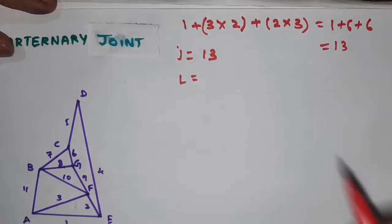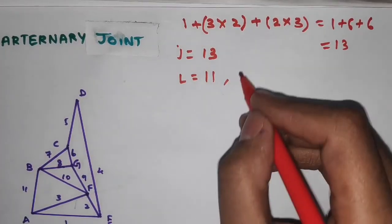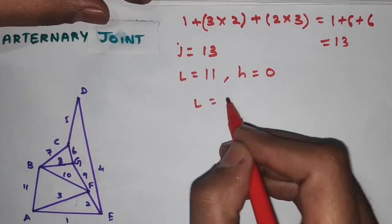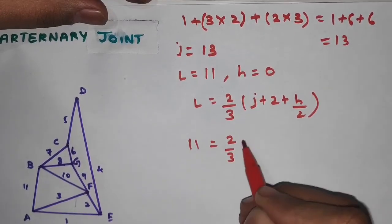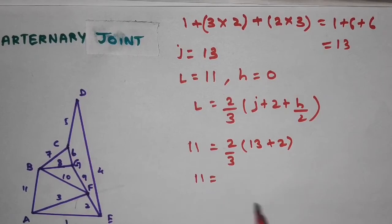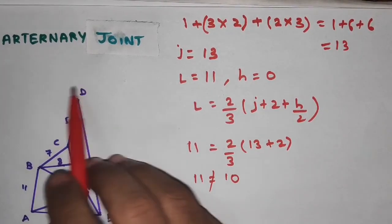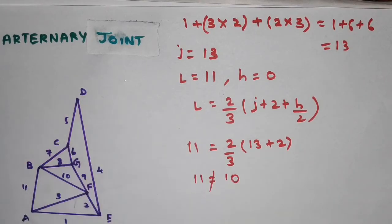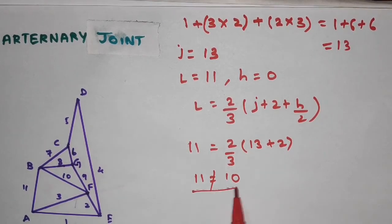With L = 11, J = 13, and H = 0, substituting into L = (2/3)(J + 2) + H/2 gives: 11 = (2/3)(13 + 2) = 10. Since 11 ≠ 10, this arrangement is not a kinematic chain, even though joints are formed between the links.